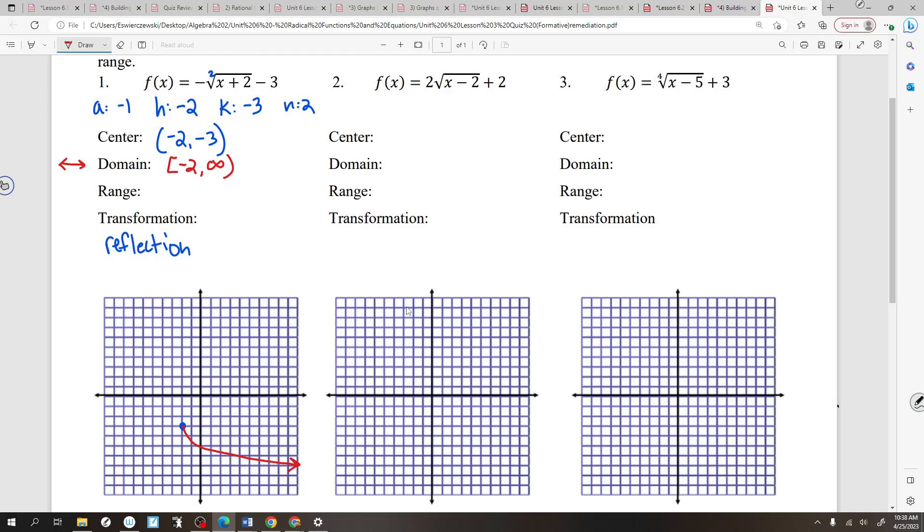Range is up, down, left, right. This is a little tricky when it's reflected because the first question you want to ask yourself is how far down does it go? Negative infinity. So here we actually start with negative infinity. How far up does it go? Negative 3. I almost made a mistake there. And then I can use the starting point to talk about the shifts. So that would go left 2, down 3.